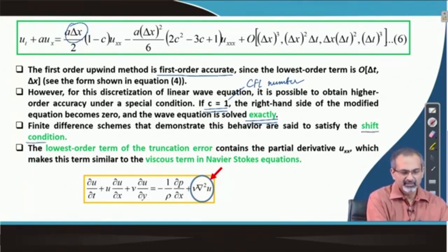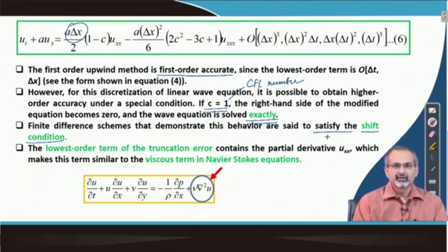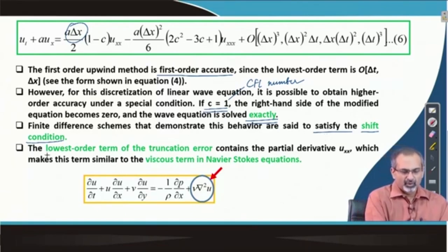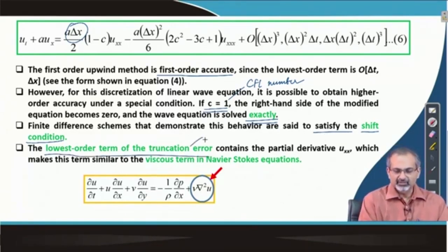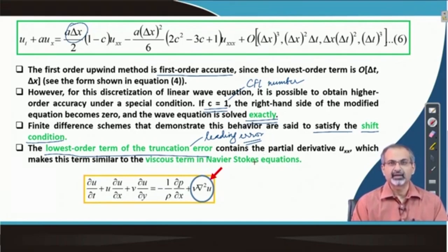This is often called satisfying the shift condition — a situation where you are able to take the truncation error completely off, meaning you are able to limit to the original partial differential equation itself. The lowest order term in the truncation error, often called the leading error term, is of significance because it is supposed to be the most significant error term affecting the solution.